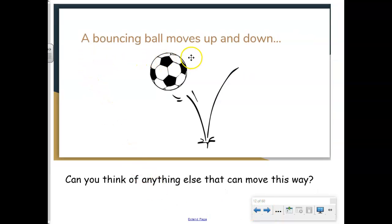A bouncing ball moves up and down. Can you think of anything else that moves this way? Think about something you probably do — you may even have one of these in your backyard — something you bounce on. What about a trampoline? When you bounce on it, it goes up and down. A seesaw? Yes, they all go up and down. Think of something else.